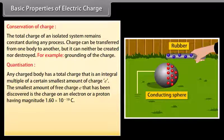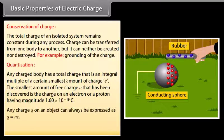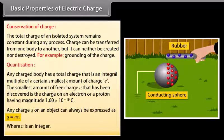The smallest amount of free charge e discovered is the charge on an electron or proton, having magnitude 1.60 × 10⁻¹⁹ coulomb. Any charge q on an object can always be expressed as q = ne, where n is an integer.